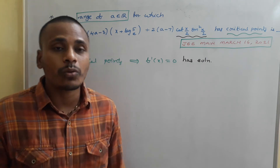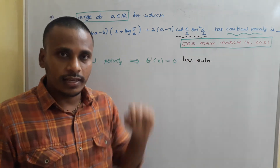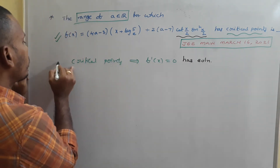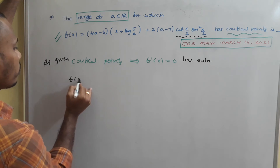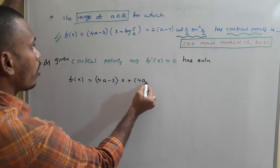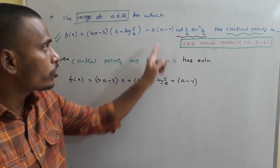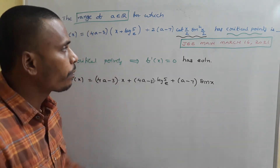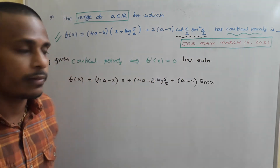First simplify: cot(x/2)·sin²(x/2) = [cos(x/2)/sin(x/2)]·sin²(x/2) = sin(x/2)·cos(x/2)·2 = sin x. So f(x) = (4a - 3)x + (4a - 3)·log5 + (a - 7)·sin x.